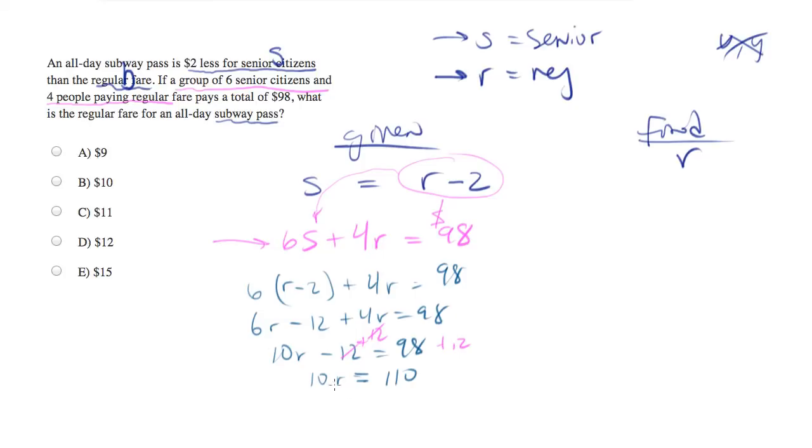Let's divide both sides by 10. And what are we left with? We're left with R equals 11. Is that a match between what we've been asked to find? Yes. So 11 is our answer, which is C.